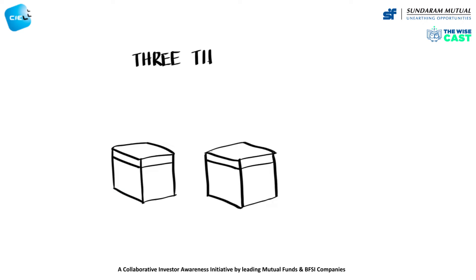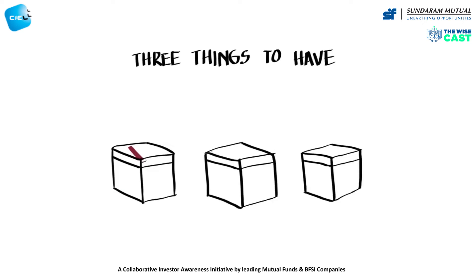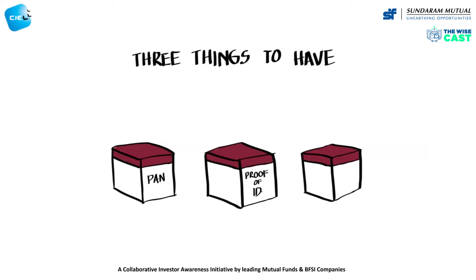Anurag needs three pieces of documentation. The first is the PAN card — he may already have one; if not, he should apply for one. Second is the proof of identity, which should have been issued by a government agency. Third is the proof of address, which can be any of the approved documents that carry his full address.